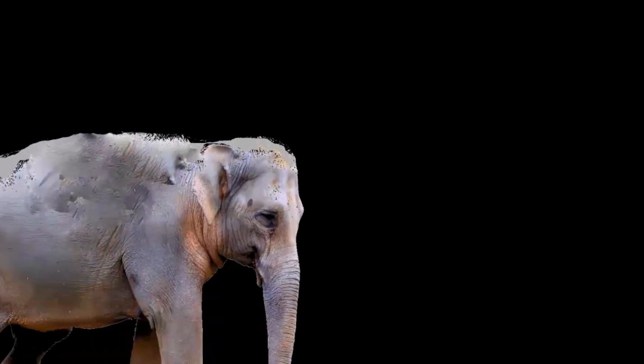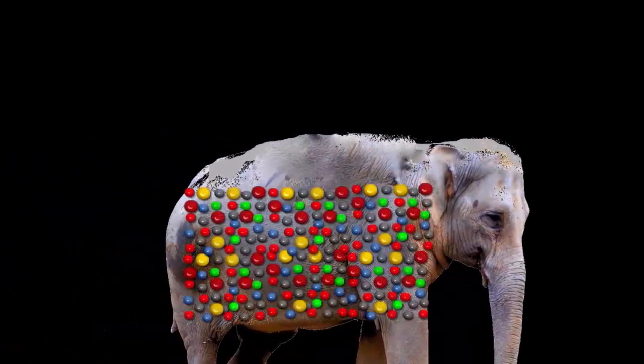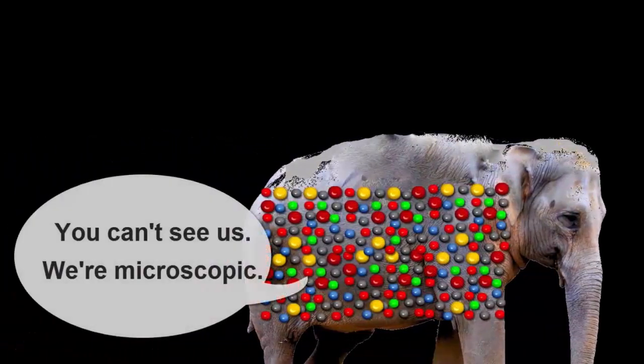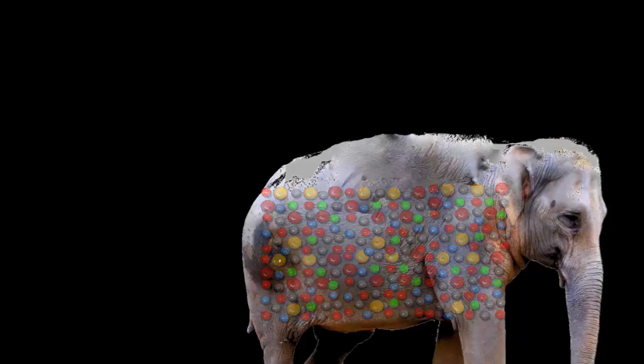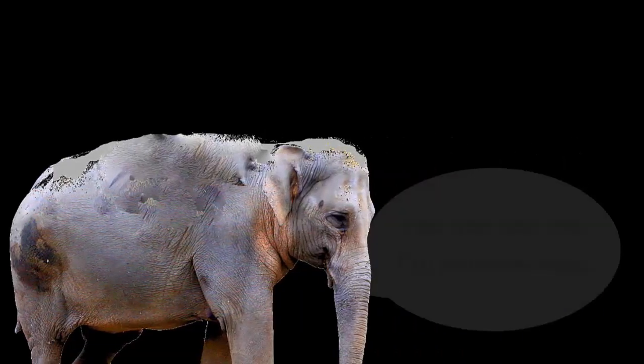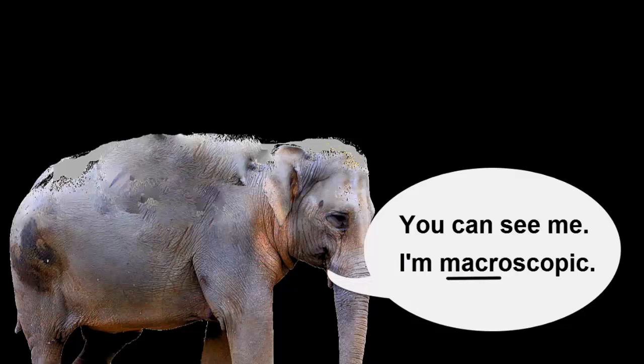The word that we give to the tiny scale of atoms that we can't see with our eyes is microscopic. The word for the large scale of substances that we can see and touch is macroscopic. Science is a lot about making connections between the microscopic and macroscopic scales of our world.